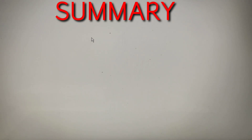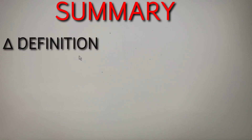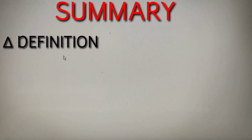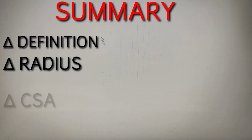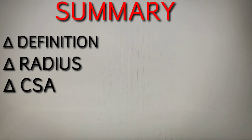Let's do a quick summary of all the topics covered in this video. First, a hemisphere is the shape formed when a plane passing through the center of a sphere divides it into two equal parts. Second, the radius is the distance from the center of the hemisphere to any point on its circumference, and it is the only attribute required to define a hemisphere. Third, the curved surface area is the surface area covered by the curved portion of the hemisphere, equal to 2πr².